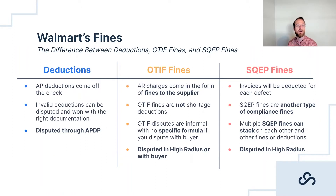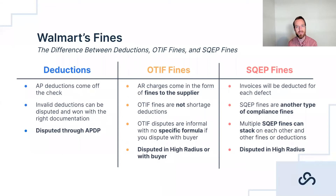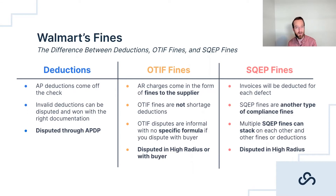OTIF fines, on the other hand, are billed from Walmart to you — they're more from the accounts receivable side of Walmart because they're trying to collect these fees. Typically they subtract these fees off of future payments. They are separate singular monthly fine invoices from Walmart, separate from shortage deductions. You can get a shortage deduction and also get a not-in-full OTIF fine for the same PO, but they are basically separate chargebacks. If you dispute one, it's not going to impact the outcome of the other.